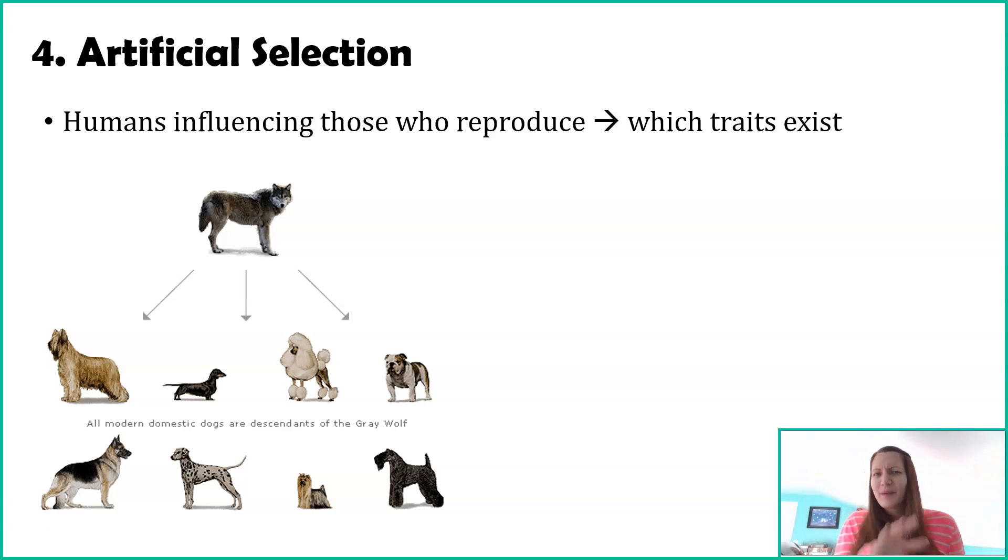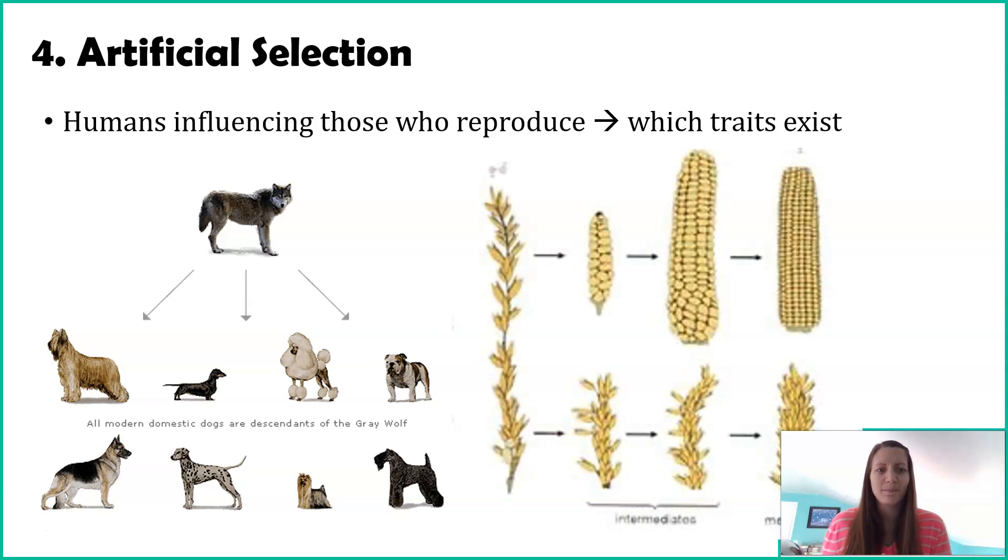Despite this being one of the most famous or most well talked about examples, I have a better example, or maybe even a more common example, is our food. The crops that we eat. Here's a picture of corn. This is one of many different crops that we consume.